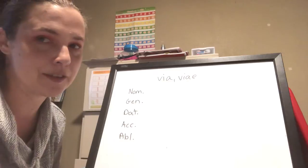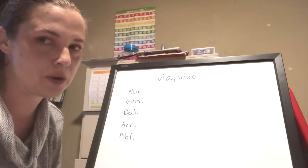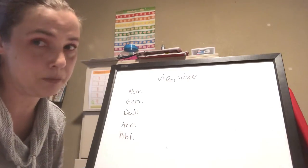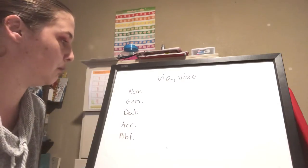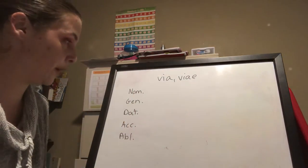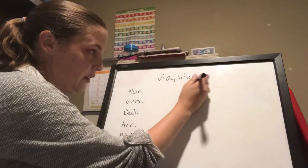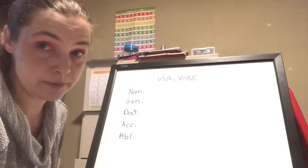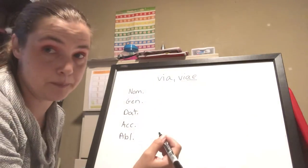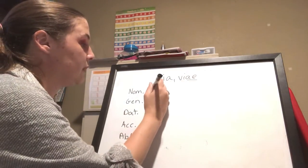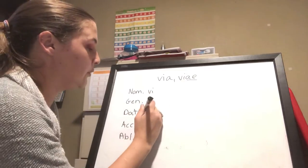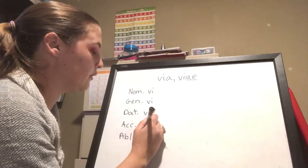If you're practicing regularly and doing work on your own, hopefully you're at a point where you kind of know what these are. We know that we take the genitive singular ending off — that's where we get our stem. So our stem is vi-, because the V makes a W sound in Latin.